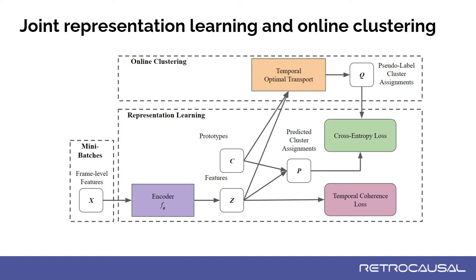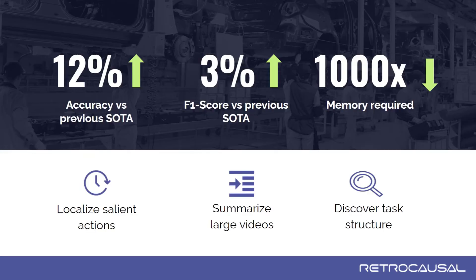Finally, we minimize the difference between predicted assignments and pseudolabel assignments by employing the cross-entropy loss. As training iterations go by, each prototype starts better capturing a corresponding step in the video. This improves the computed pseudolabel cluster assignments, which in turn improves the prototype vectors themselves. Thus, at convergence, each prototype vector becomes a cluster centroid for each step of the activity, respectively. We achieve significant gains in performance over previous state-of-the-art approaches while being three orders of magnitude more memory efficient.